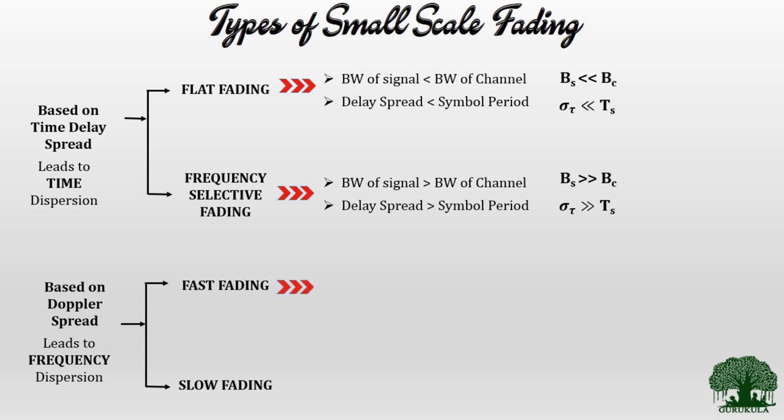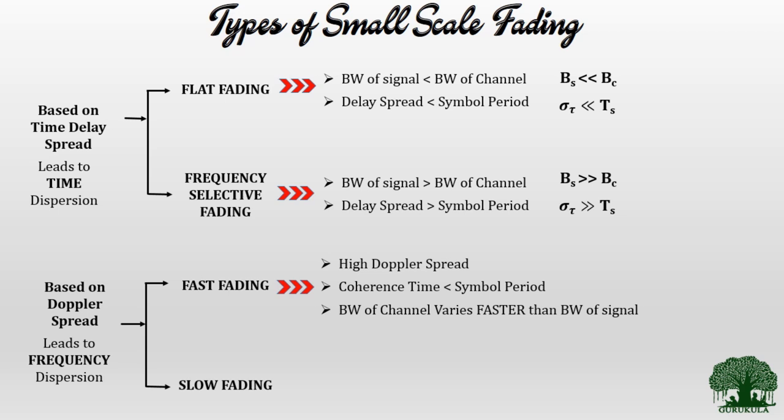Fast fading occurs whenever there is high Doppler spread, when the coherence time T_c is less than the symbol period T_s, and when the channel bandwidth varies faster than the signal bandwidth. In symbolic form: T_c < T_s and B_s < B_d, where B_d is the Doppler spread.